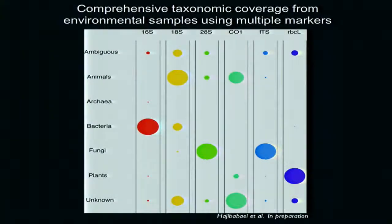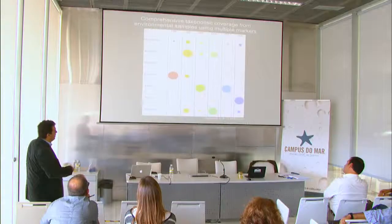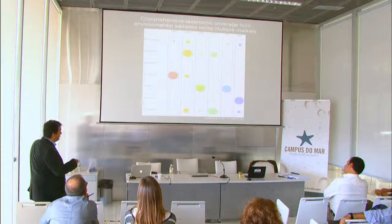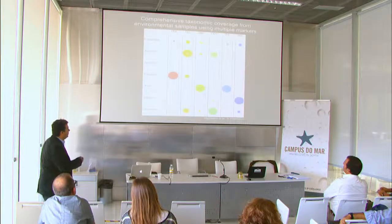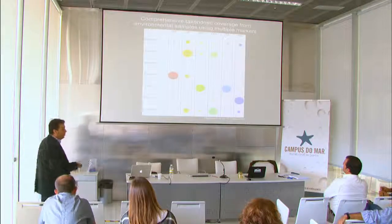Another way of looking at data through a multi-marker system: you do need different markers to get taxonomic coverage from different environments and samples, but you don't need the whole genome. 16S brings bacteria, 18S gets eukaryotes, 28S brings fungi, ITS gives more fungi, CO1 gives species-level animals, and ITS and RBCL cover plants and green algae. The combination gives good taxonomic coverage and resolution at different levels. 18S is a good overall biodiversity marker, but it greatly underestimates diversity — as shown in a recent paper on mayfly fauna.